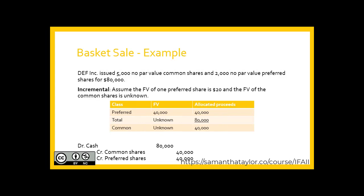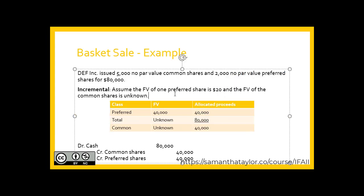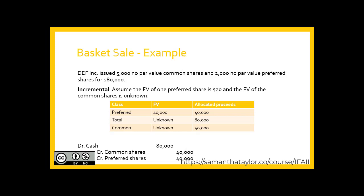Under the incremental method, assume we know that one preferred share is worth $20, but the common shares are not currently trading—their value is unknown. We calculate the preferred share value as $20 × 2,000 = $40,000, which is allocated to preferred shares, and the remainder is allocated to common shares. That is the incremental method when one value is known and the other is not.